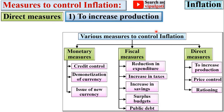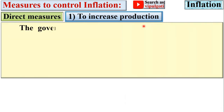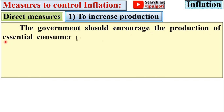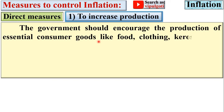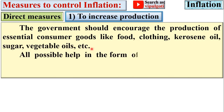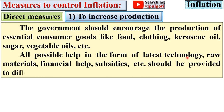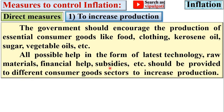Under direct measures, the first one is to increase production. The government should encourage the production of essential consumer goods like food, clothing, kerosene oil, sugar, and vegetable oil. All possible help in the form of latest technology, raw materials, financial assistance, subsidies, etc. should be provided to different consumer goods sectors to increase production.